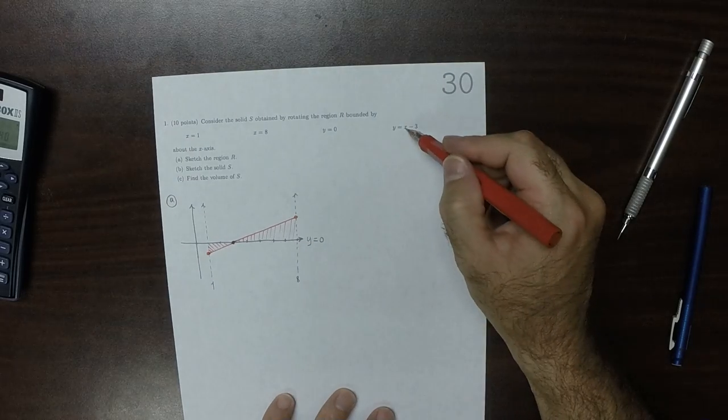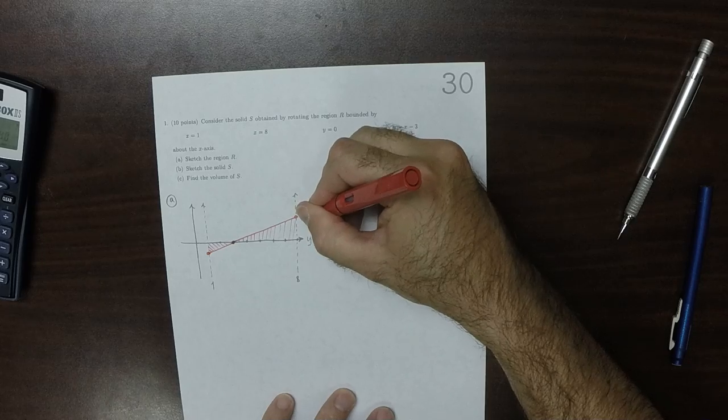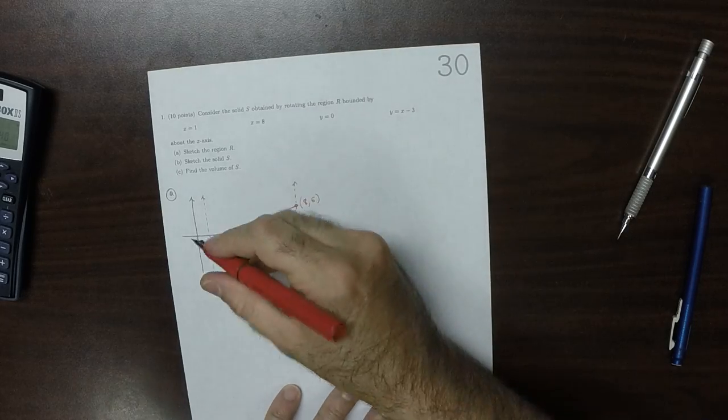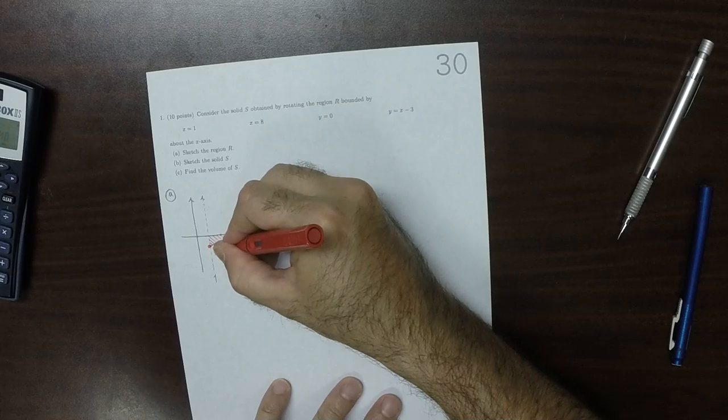So at 8, 8 minus 3, this is 5, so this is the point 8, 5. And at 1, that's the point 1, negative 2.